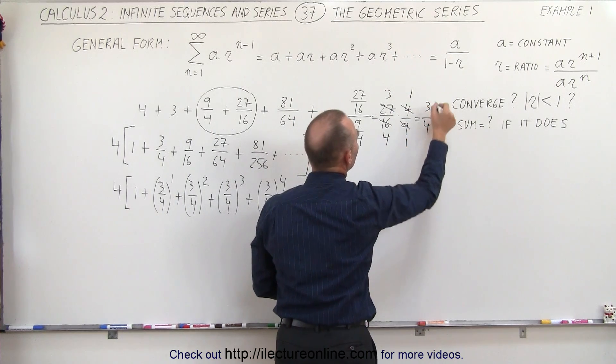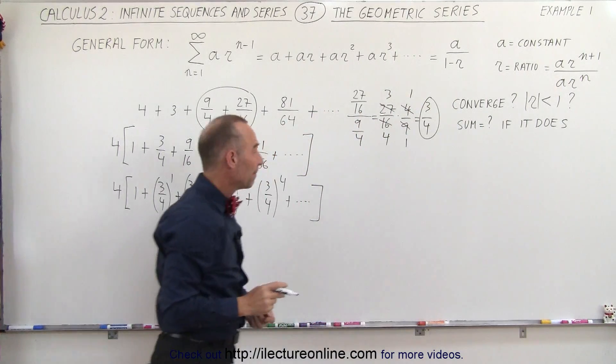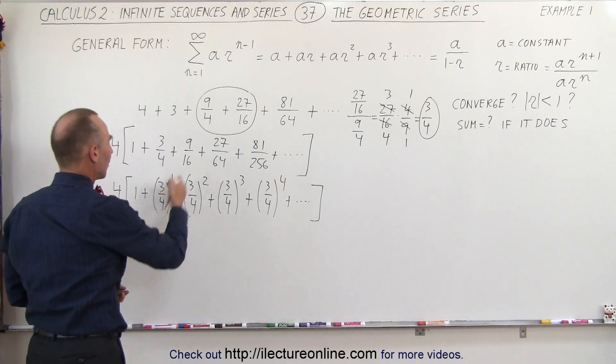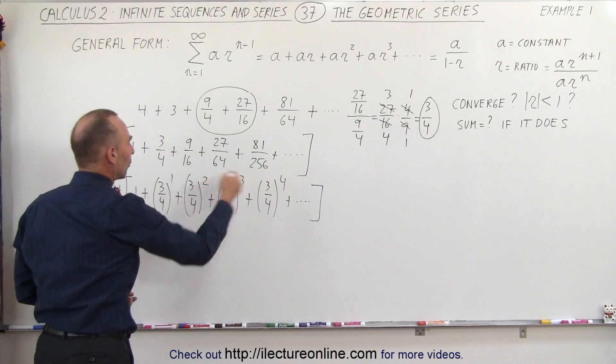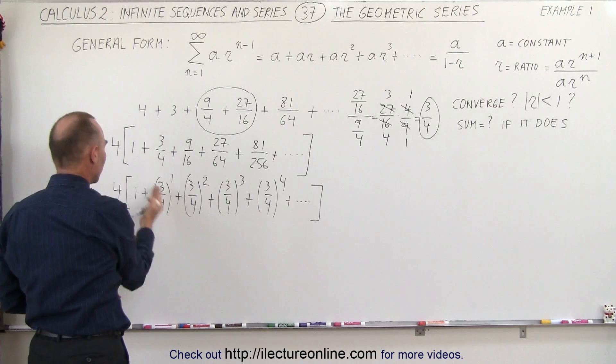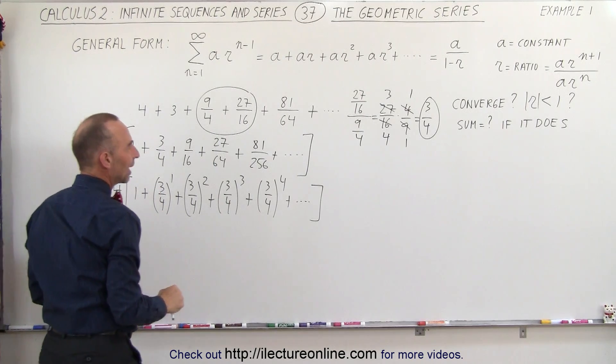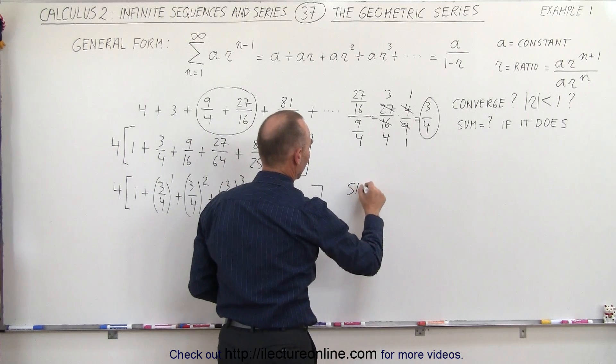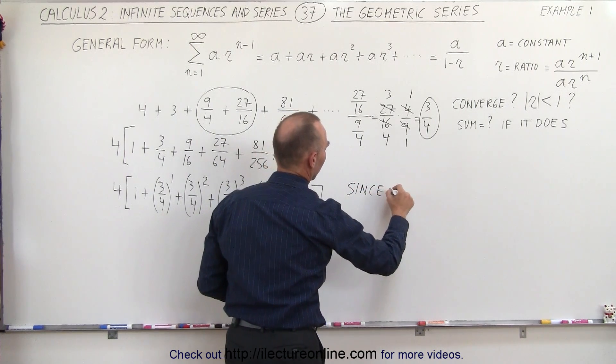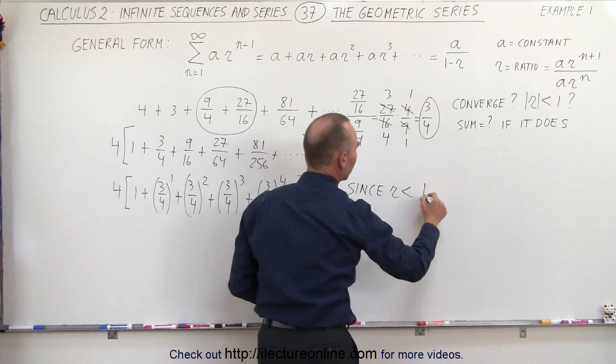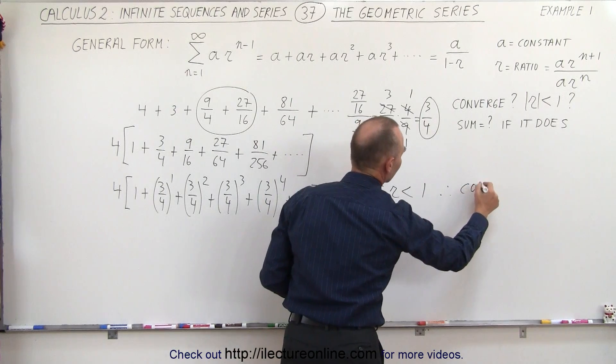That ratio is indeed 3 quarters, which means we verified that this indeed is our ratio. This is the number we factored out. Our constant is a. So we can see that since our ratio r is less than 1, therefore we know that the series converges.